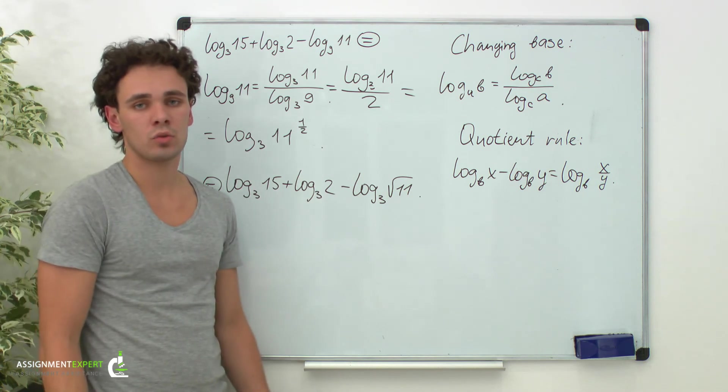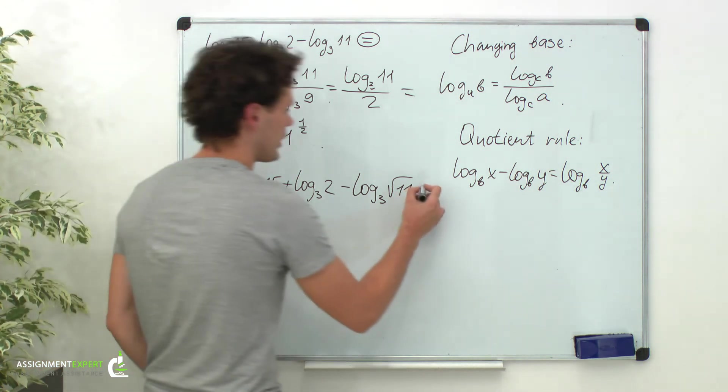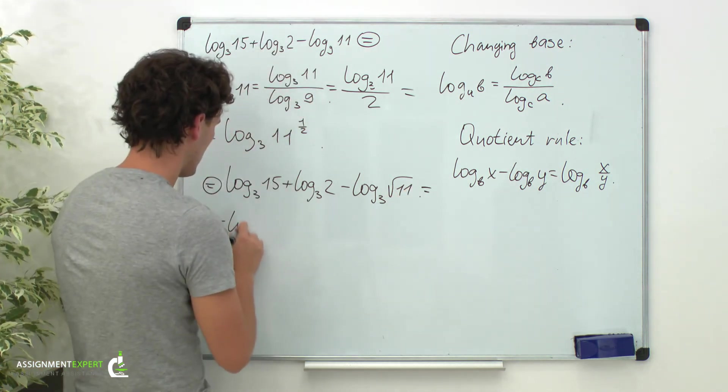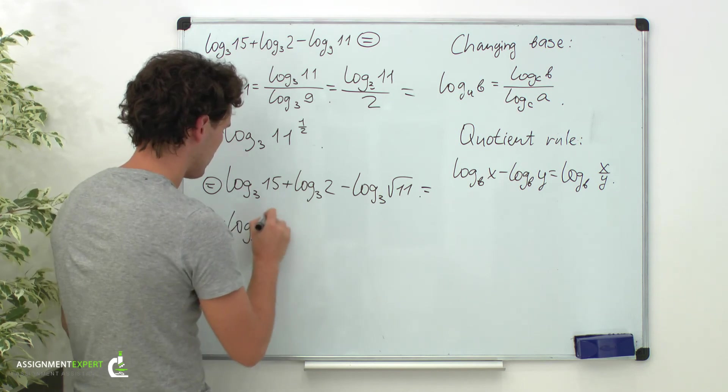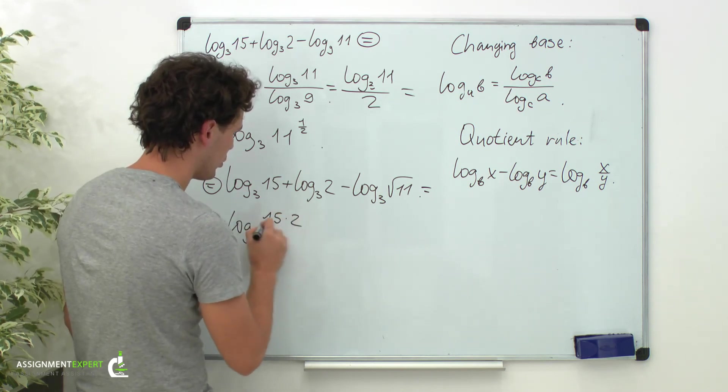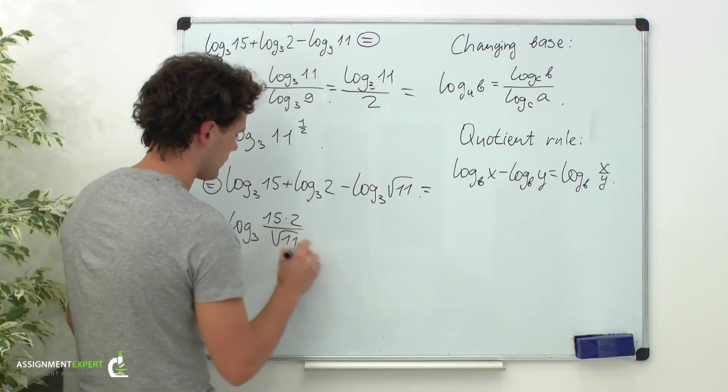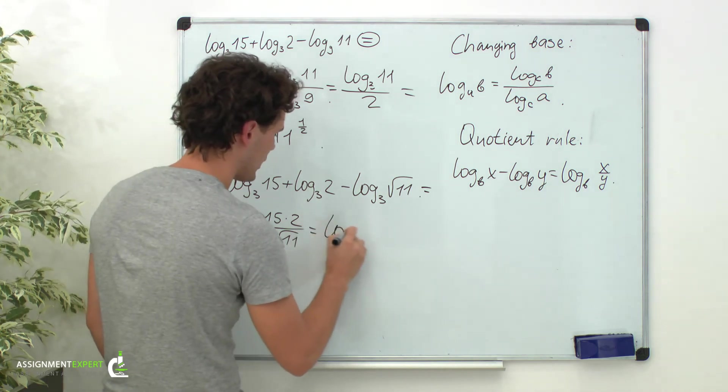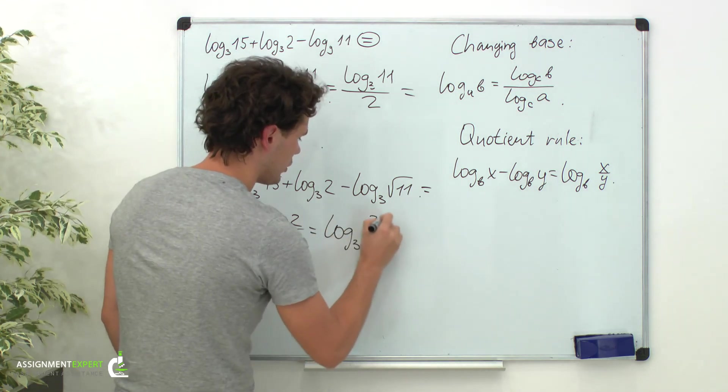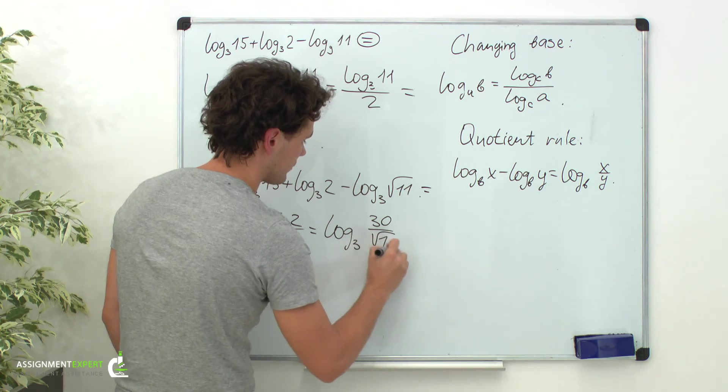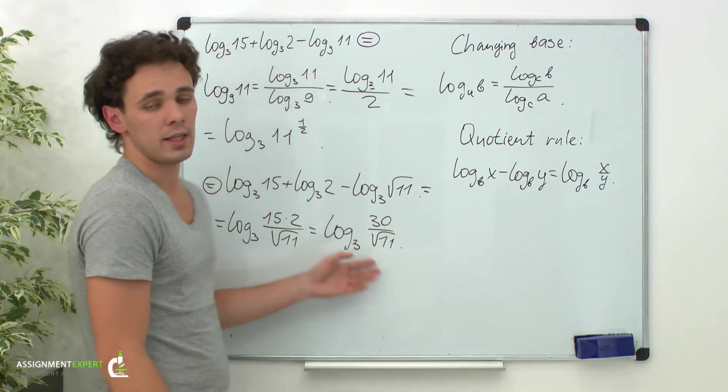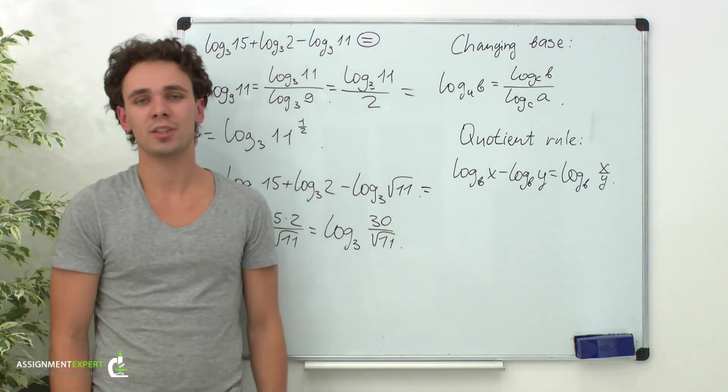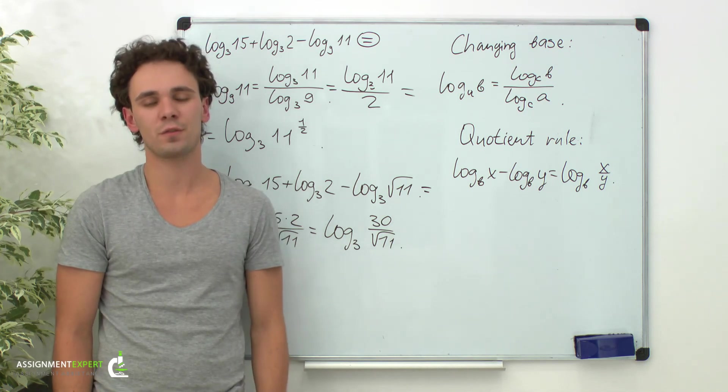So now applying these 2 rules to our expression we get the following: log base 3 of 15 times 2 over square root of 11, and this equals log base 3 of 30 over square root of 11. This is the answer. I hope it helped. If you have any further questions feel free to ask them.